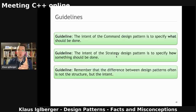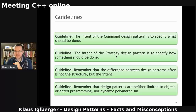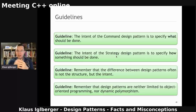So the intent of the Command design pattern is to specify what should be done. The intent of the Strategy design pattern is to specify how something should be done. And the same intent applies to these algorithms: what should I do with each element in for_each? That's a Command. How should I accumulate the elements in accumulate? That's a Strategy. Most importantly: the difference between design patterns is not the structure — it's the intent. And in these examples you can see that design patterns are neither limited to object-oriented programming nor dynamic polymorphism.